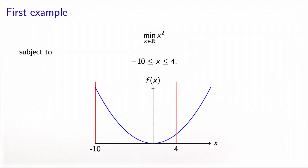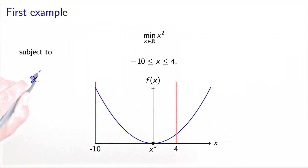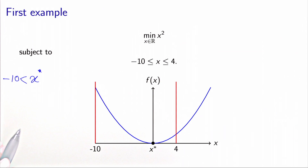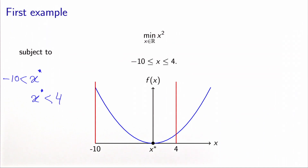The optimal solution of this problem is x star equals 0. This is the lowest possible value of the function, and it verifies the two constraints. Now, if we had ignored the constraints and solved the problem without constraints, the solution would have been exactly the same. In this case, we say that the constraints are not active at the solution: x star is strictly greater than minus 10, so that constraint is not active, and x star is strictly less than 4, so that constraint is not active either.